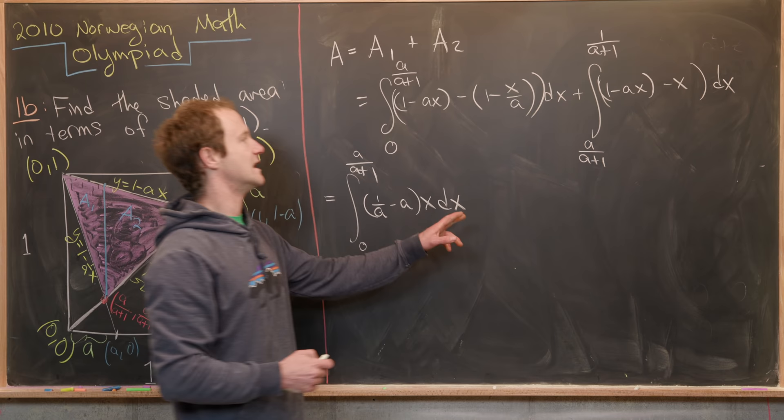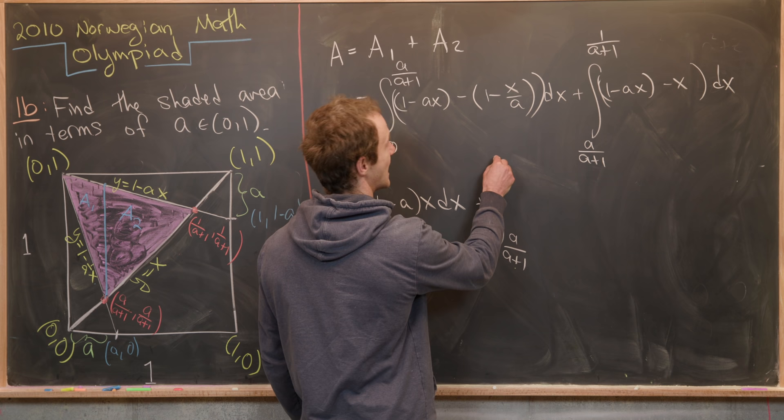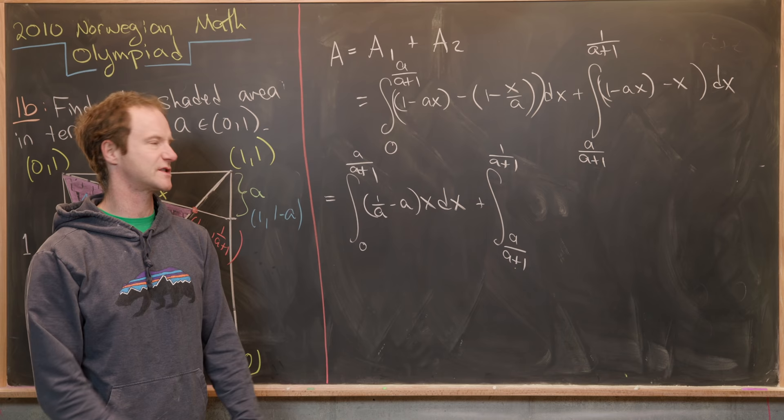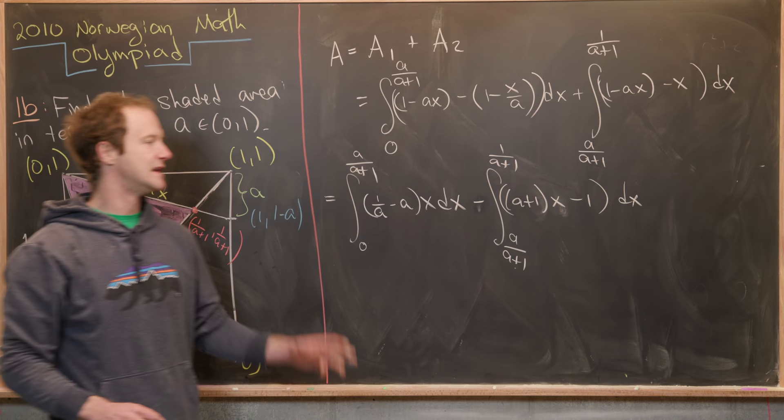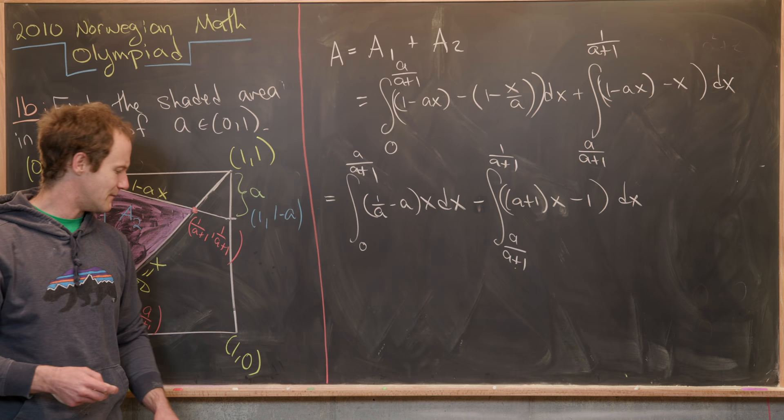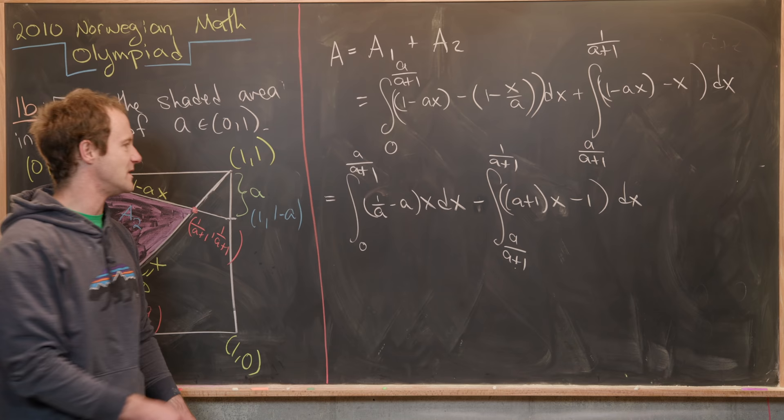Then next, we can do something similar over here. This is going to be the integral from A over A plus 1 to 1 over A plus 1 of, maybe we could factor a minus sign out of this whole thing, just so the signs look better on the inside. So if we do that, we'll have A plus 1 times X minus 1, like that DX. Now it's just a matter of taking the antiderivative, plugging things in, and then making like a pretty gnarly calculation, but it is an elementary calculation. So let's maybe get to it.